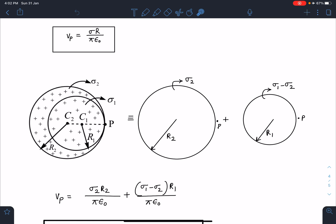Now two different results will come: sigma_2*r2/(pi*epsilon_0)—I am using this result, potential due to the bigger one at point P.